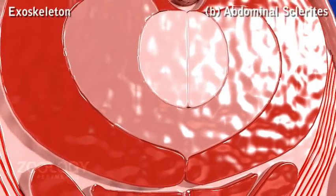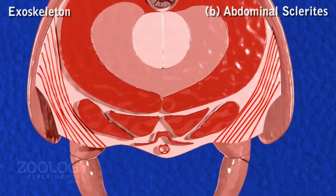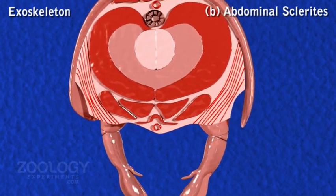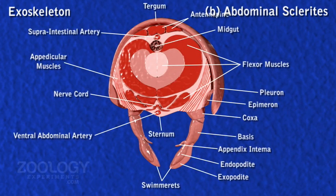Abdominal sclerites: The sclerite of each abdominal segment is separate with movable joints. In each abdominal sclerite, the dorsal broad plate is called the tergum and the ventral plate is called the sternum.